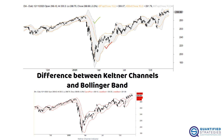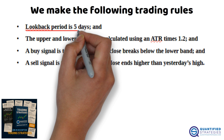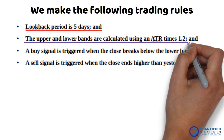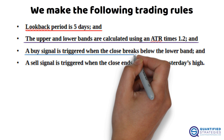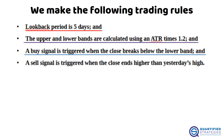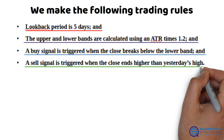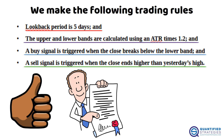Let's look at a Keltner channel trading strategy — a mean reversion strategy for the S&P 500. We make the following trading rules: look-back period is 5 days, and the upper and lower bands are calculated using an ATR times 1.2. A buy signal is triggered when the close breaks below the lower band, and a sell signal is triggered when the close ends higher than yesterday's high. That's it — simple, rule-based, and easy to code or track.